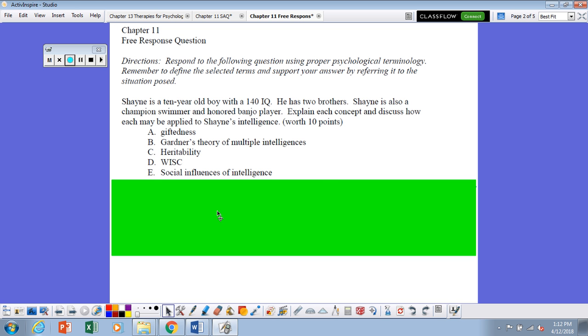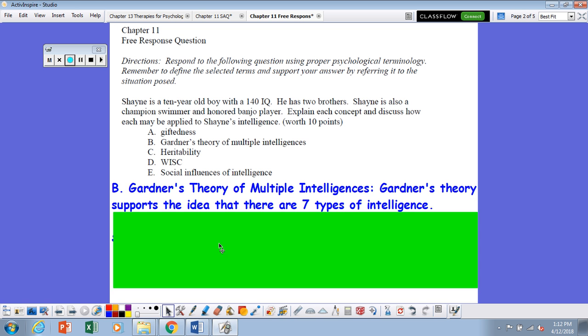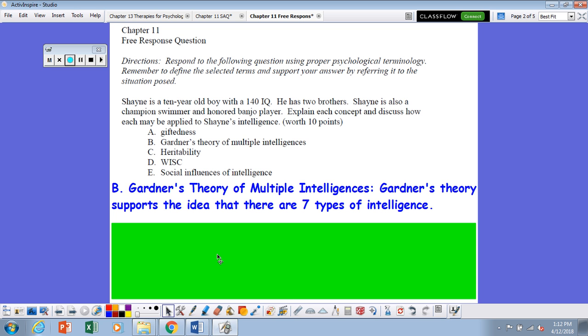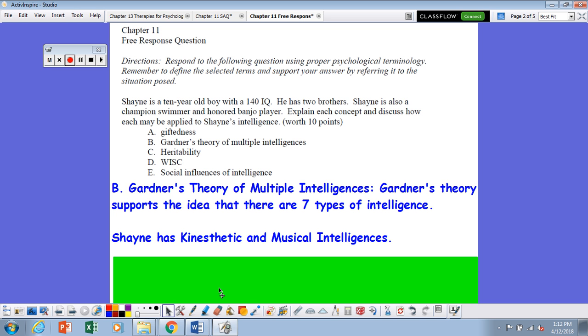Letter B, Gardner's theory of multiple intelligences. In Gardner's theory, this supports that there are seven types of intelligences or seven ways to be smart. And one of those happens to be kinesthetic and another happens to be musical intelligences.